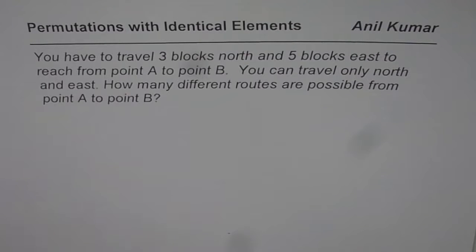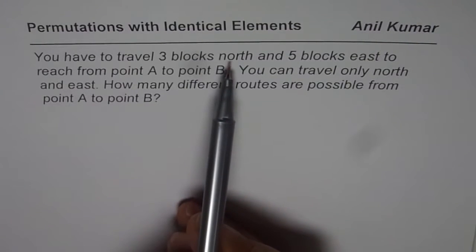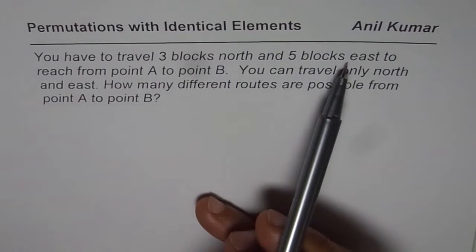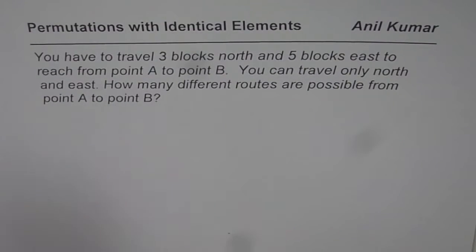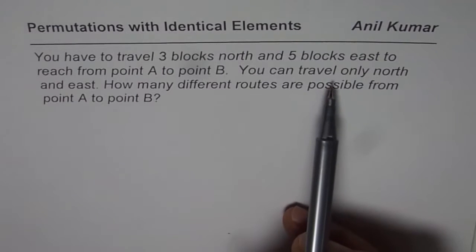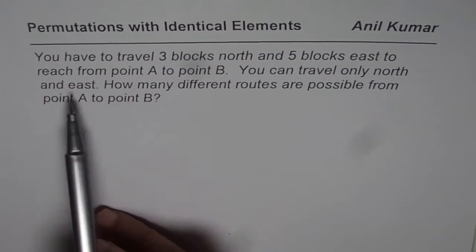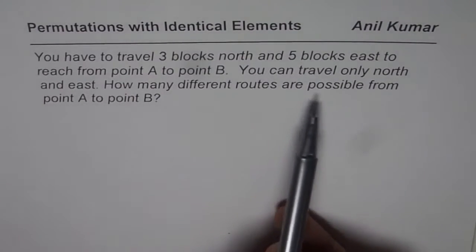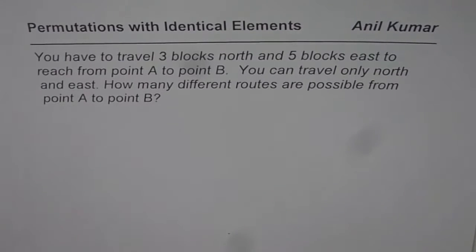The question for you is: you have to travel 3 blocks north and 5 blocks east to reach from point A to point B. You can travel only north and east. How many different routes are possible from point A to point B?